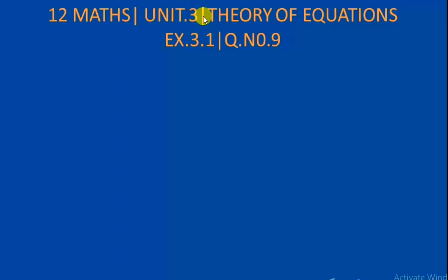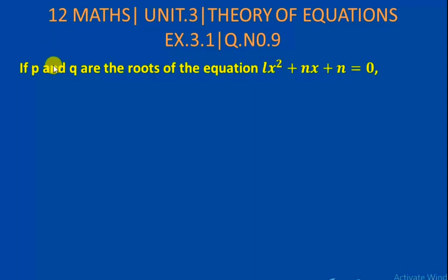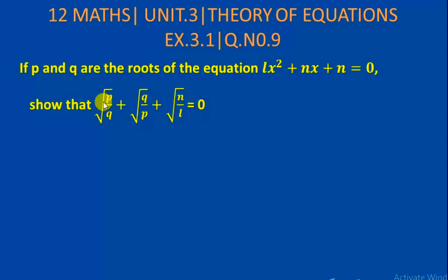12th standard, unit 3, Theory of Equations, Exercise 3.1, question number 9. If p and q are the roots of the equation lx² + nx + n = 0, show that √(p/q) + √(q/p) + √(n/l) = 0.